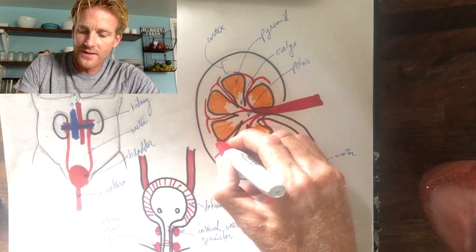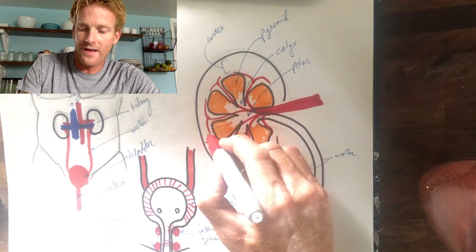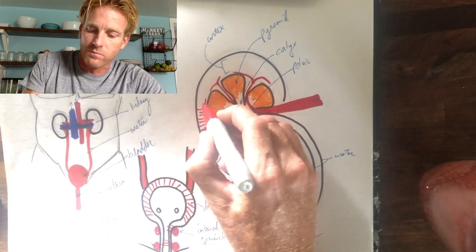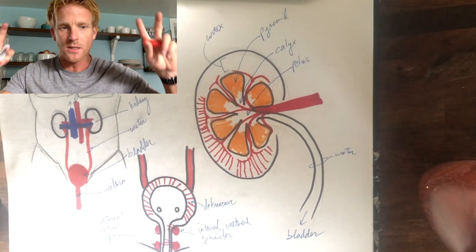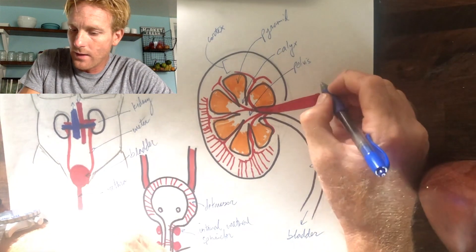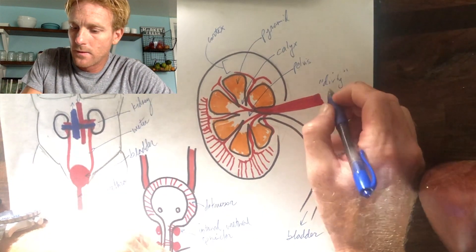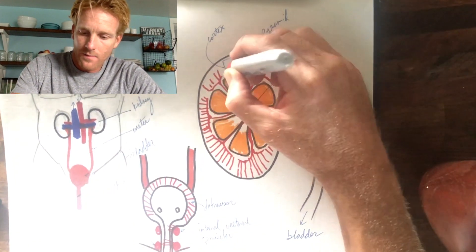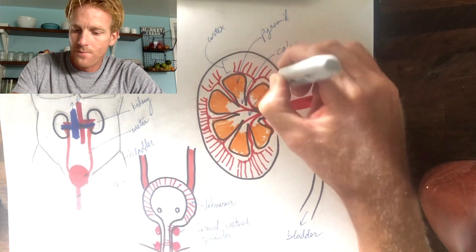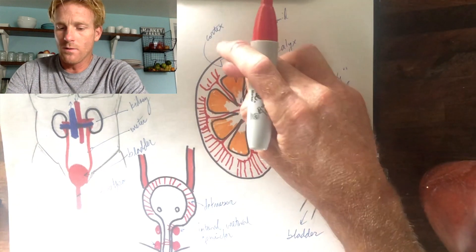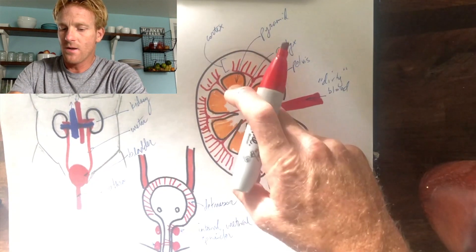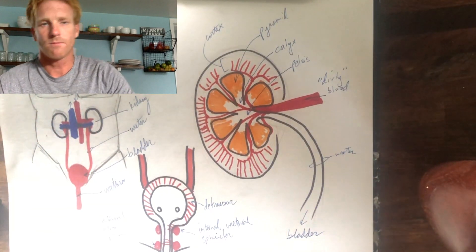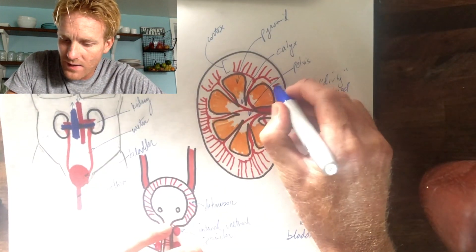The kidney has this very intricate system of blood vessels taking blood out to the cortex — that's where the kidney works its magic and filters the blood. Think of the incoming blood as dirty blood. The kidney takes out everything we don't need, which drains into the calyx, pelvis, ureter, and bladder. Everything left over is clean, adjusted blood.